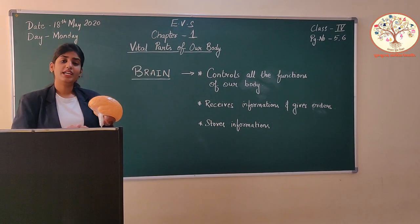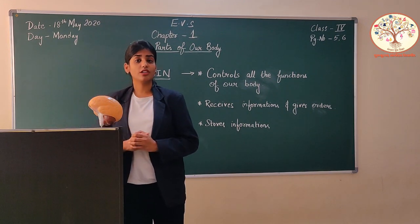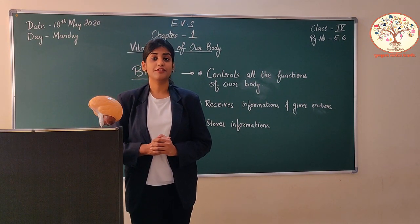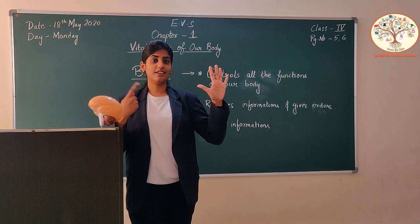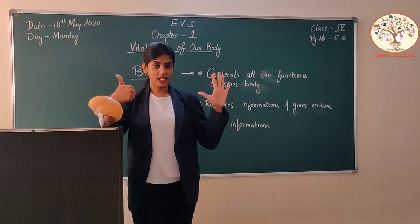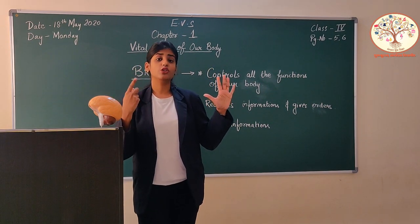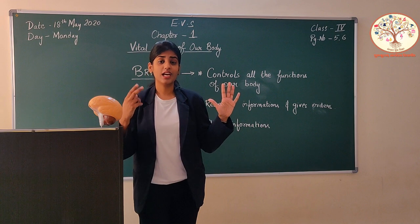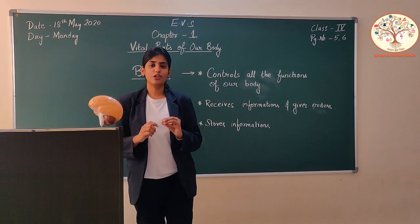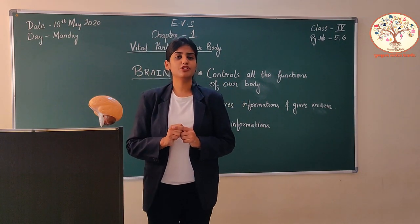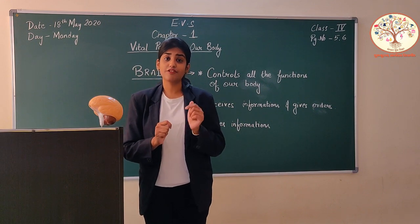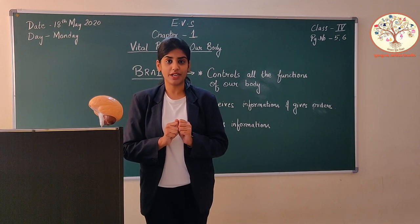Now tell me, how many sense organs do you have? Five — eyes, ears, nose, tongue, and skin. Today I am going to show you how these sense organs send information to the brain.